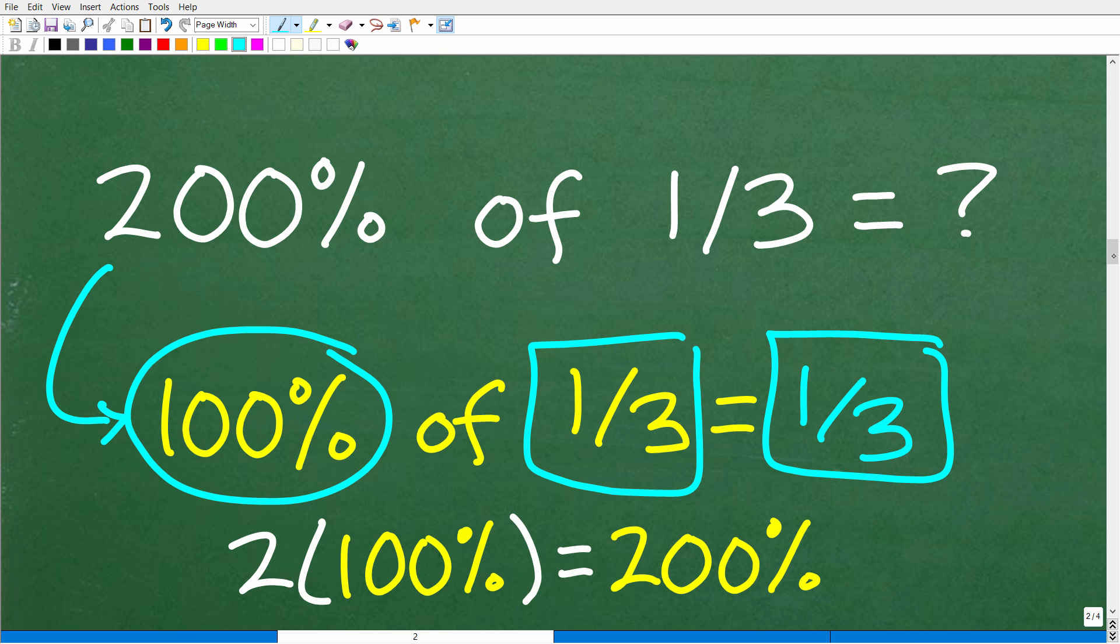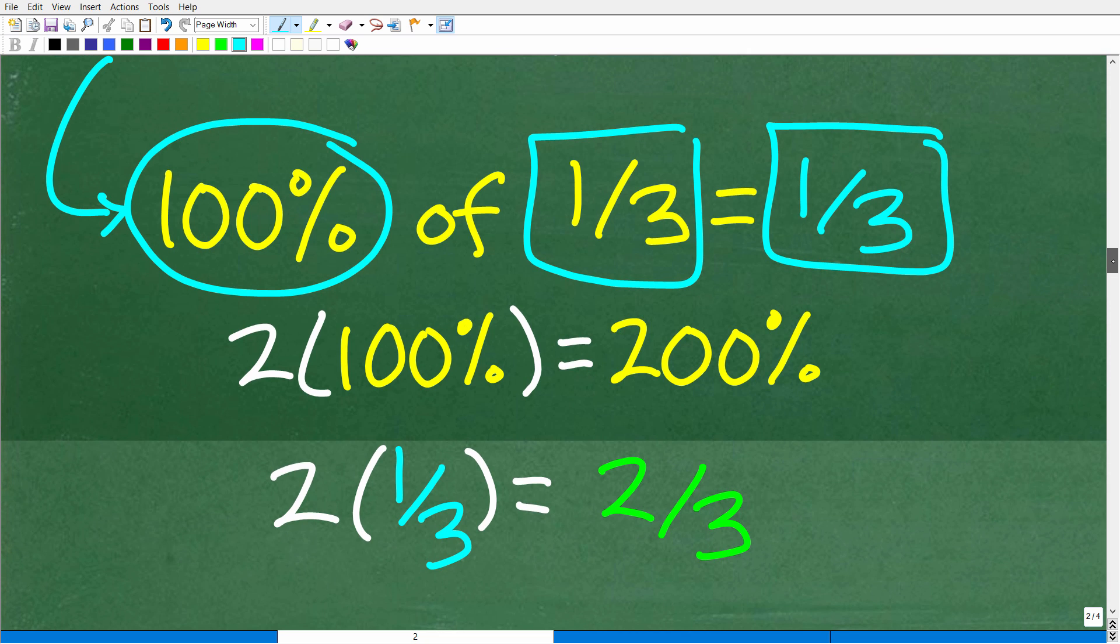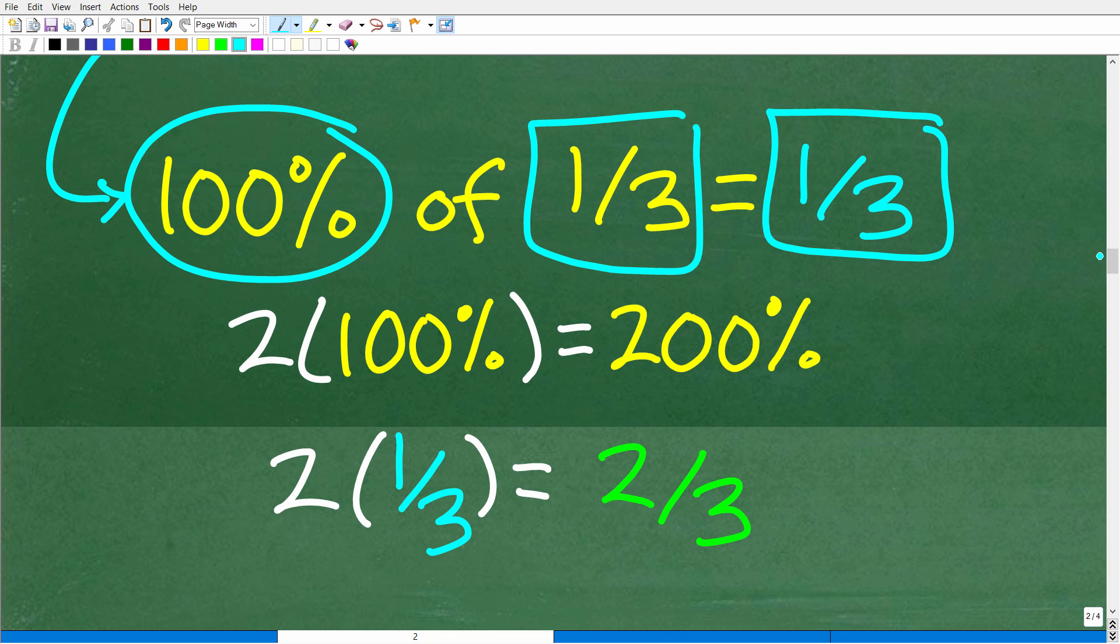So, what's 200% of one-third? Well, if 100% of one-third is one-third, okay, you're going to have to follow me here. It's a little bit of a tongue twister. So, 100% of one-third is one-third. Well, 200%, okay, is just doubling that 100%. So, if we double the 100%, that, of course, is 200. But if we already know that 100% of one-third is one-third, well, if we double the answer for 100%, that's just doubling the one-third. Or two times one-third, of course, is two-thirds.